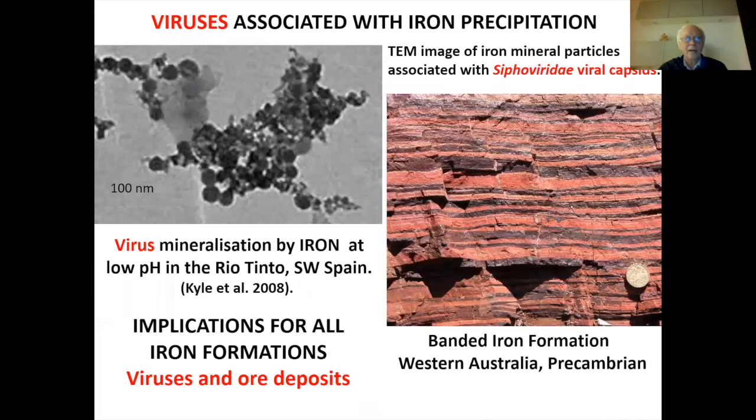Around 2008, a paper was published showing iron being precipitated in a river in Spain by viruses. Nobody has run with this idea. People have talked about bacteria, of course, but nobody has really explored the idea of viruses precipitating iron deposits.